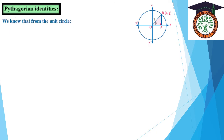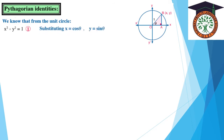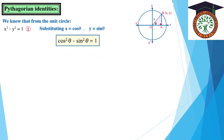We know that from the unit circle, x² + y² = 1. By substitution, x = cos z and y = sin z. Therefore, cos²θ + sin²θ = 1.